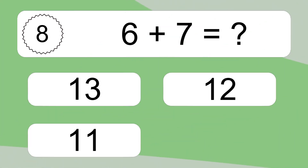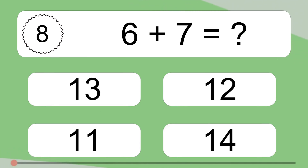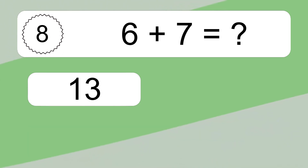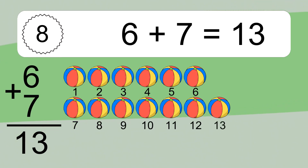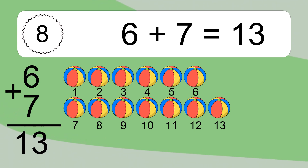6 plus 7 equals what? 6 plus 7 equals 13. Let's count it. 1, 2, 3, 4, 5, 6, 7, 8, 9, 10, 11, 12, 13.